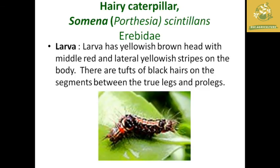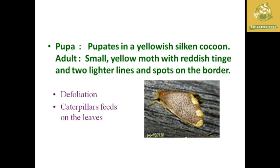There are two hairy caterpillars: Someena skintillans, family Arctiidae. The larval head is reddish, and the lateral side has red and yellow stripes with tufts of black hairs on the true legs and prolegs. This is a characteristic of Someena skintillans. The pupa is yellowish, and the adult has yellow coloring with red tinge and yellow lines and spots on the body.